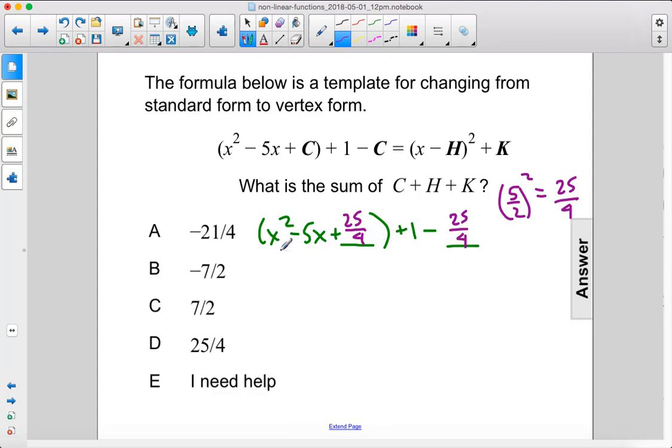We need to factor this, and that would become x minus 5 over 2 squared minus 21 over 4. So then we have this.